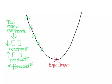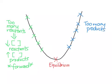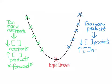Conversely, if we find ourselves on this side of the downhill — past equilibrium — we have too many products. We missed equilibrium by a bit and have too many products compared to reactants. The way to fix this is to use up some of our products: decrease the concentration of our products and increase the concentration of our reactants. In this case, our reaction will go in the reverse direction to reach equilibrium.